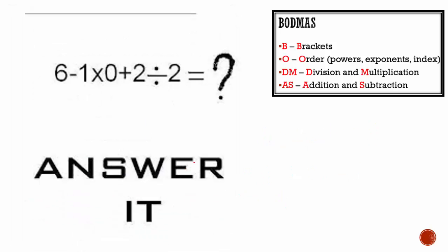Second one: 6 minus 1 multiplied by 0 plus 2 divided by 2. No brackets, no orders. We do division and multiplication from left to right. 1 multiplied by 0 is 0, 2 divided by 2 is 1. We do it from left to right: 6 minus 0 is 6, 6 plus 1 is 7. 7 is the correct answer.